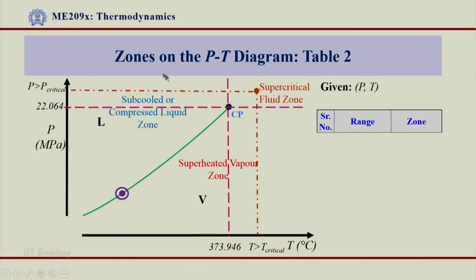This slide now will help us understand if I were to use table 2, how do I identify different zones for a given state. Again I will go back to P-T diagram here and now I have been given P-T value over here.